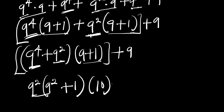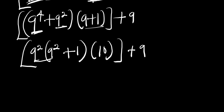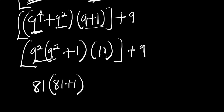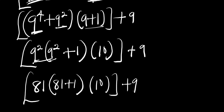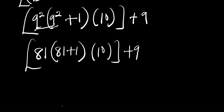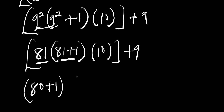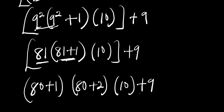Now 9 plus 1 is 10 and we have plus 9. Since 9 to the power of 2 is 81, we have (81 plus 1) multiplying 10, plus 9. We can rewrite 81 as 80 plus 1, so we have (80 plus 1)(80 plus 2) times 10, plus 9.